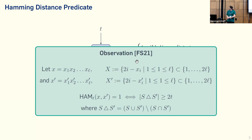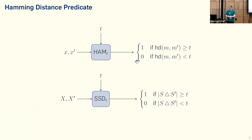The symmetric set difference is basically the union of two sets minus the intersection — so the set of all elements that are in exactly one of the two sets. With that we can define the predicate for symmetric set difference: we have again a threshold, we get two sets as inputs, and the predicate outputs one if and only if the symmetric set difference is greater than or equal to T.